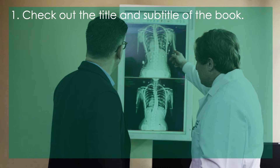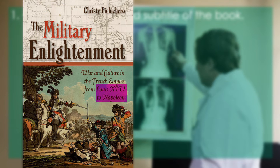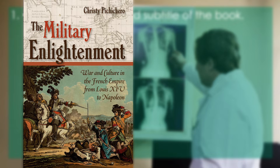How about another one? Christy Pikkero's The Military Enlightenment: War and Culture in the French Empire from Louis XIV to Napoleon. What have we found out just by looking at the title and subtitle? It's military history, it's about France and its empire, it's set in the period from roughly the late 17th to the early 19th centuries, and it's about war and culture of the Enlightenment. You can get a lot from just an initial glance at the title and subtitle of a book.